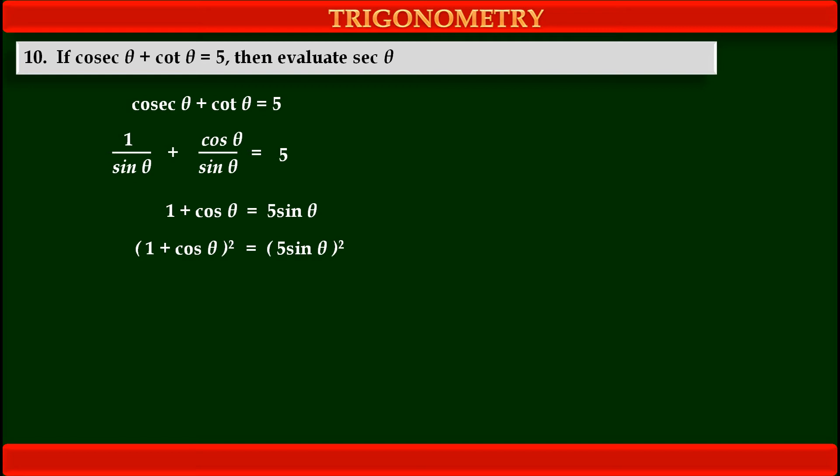Now we have to solve these squares. After expansion of the first bracket on the left-hand side, we get 1 plus 2 cos θ plus cos² θ. On the right-hand side, 5 squared is 25, so we get 25 sin² θ.